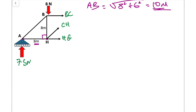We'll start with member CH. Notice that CH is the only inclined member in this cut section — all other members are horizontal and therefore have no vertical component. This means CH is the only unknown in the vertical force equation, making it straightforward to solve. We take the sum of vertical forces equal to zero.